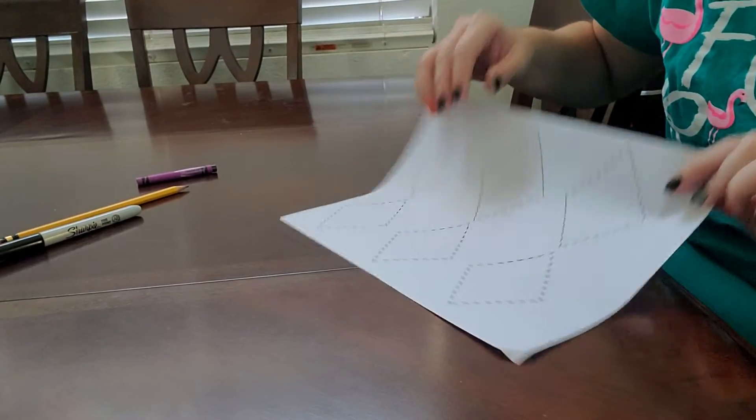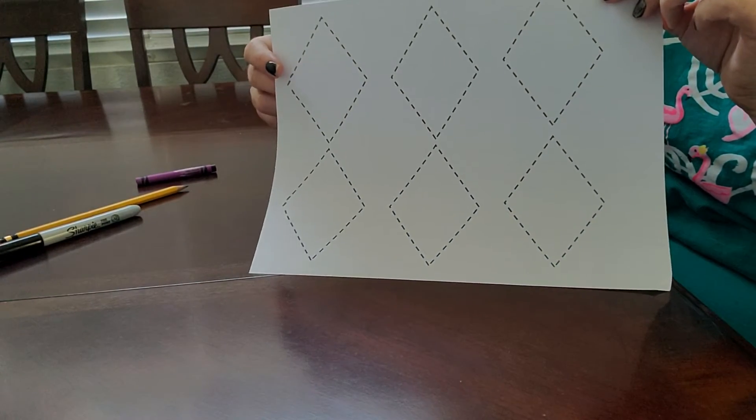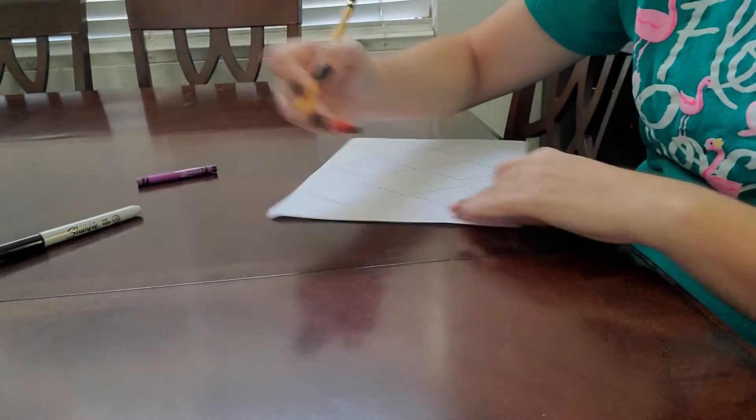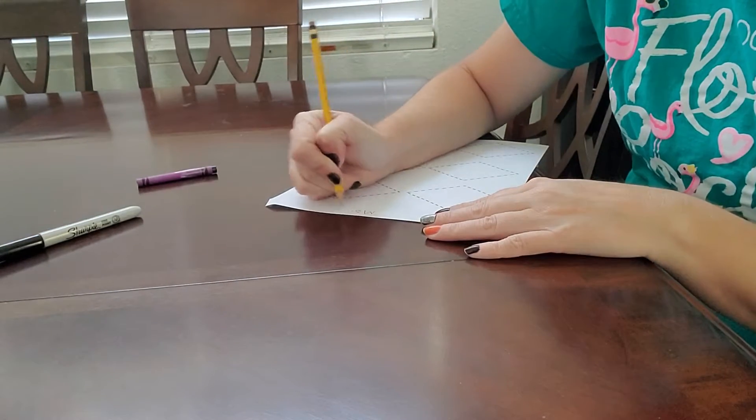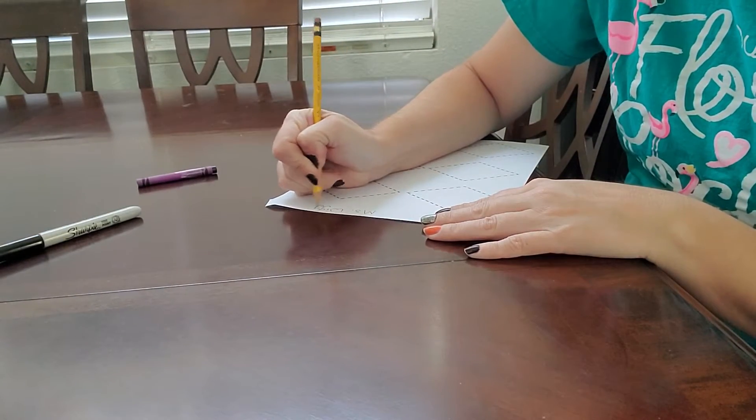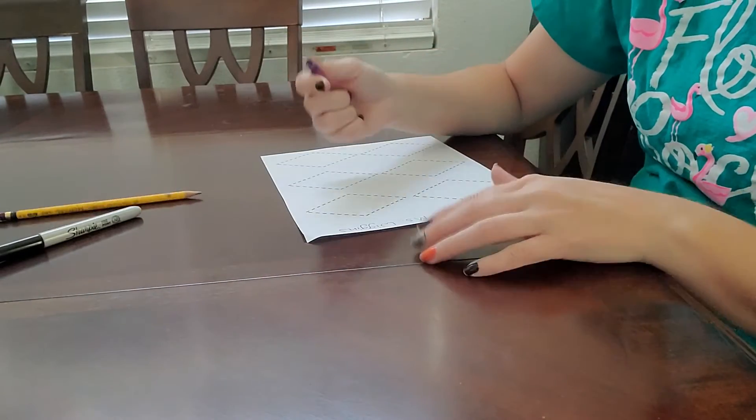Hello, my friends. All right, let's work on tracing our diamonds. So let's put our name at the very top first, and then let's get our purple crayon, and we're going to trace our diamonds.